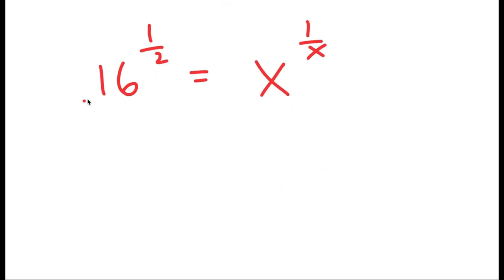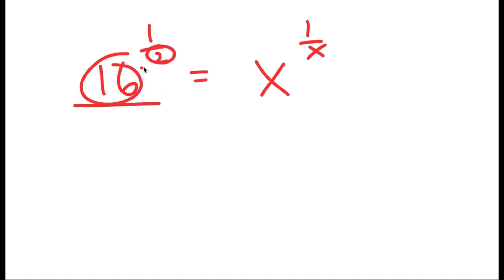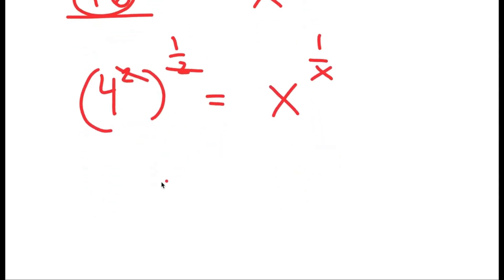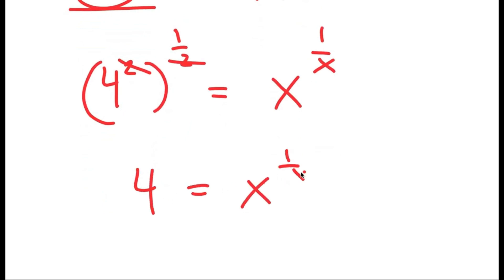My goal is to turn the left side to be in the form some number to the power of 1 over that number, so we can make that number our solution. Right now, 16 and 2 have to turn into the same number. Since 16 is the same thing as 4 squared, I rewrite it as 4 squared to the power of 1 half. Since 2 times 1 half is just 1, I'm left with 4 is equal to x to the power of 1 over x.